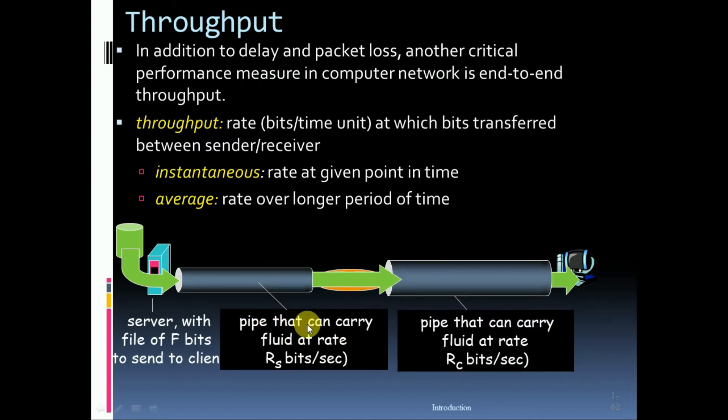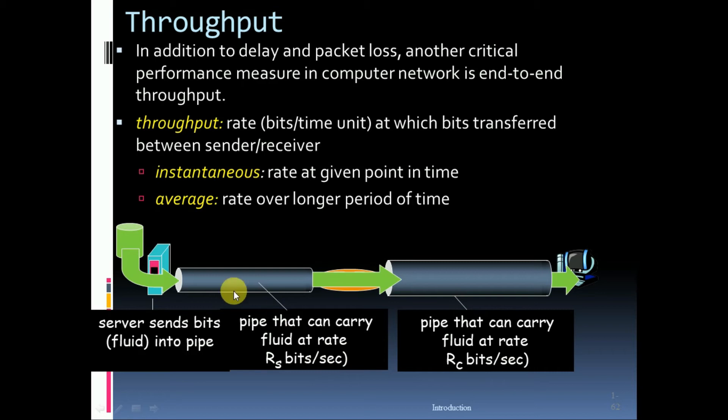For example, pipe that can carry fluid at rate of Rs bits per second and pipe that can carry fluid at rate of Rc bits per second. This is server sends bits fluid into pipe.